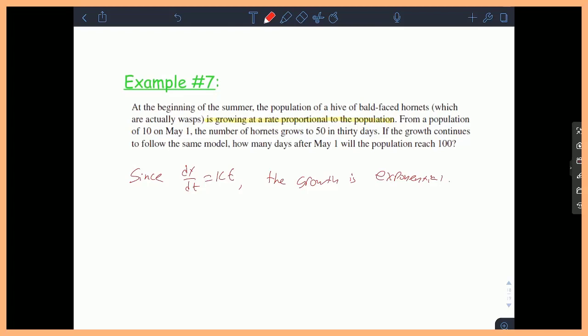Let's keep reading. From a population of 10 on May 1st, the number of hornets grows to 50 in 30 days. Interesting. I'm going to write that down. So the population grows by a factor of 5, by a factor of 5 in 30 days. That's important. I'm going to need this fact in a minute.